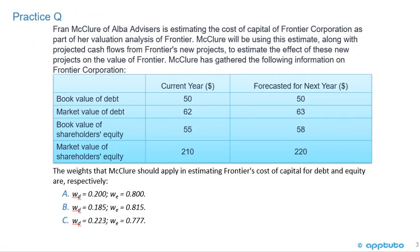We're going to finish this LOS with a practice question. Fran McClure of Alba Advisors is estimating the cost of capital of Frontier Corporation as part of her valuation analysis. McClure will be using this estimate along with projected cash flows from Frontier's new projects to estimate the effect of these new projects on the value of Frontier. McClure has gathered the following information on Frontier Corporation.